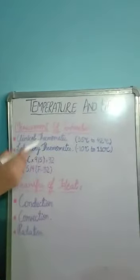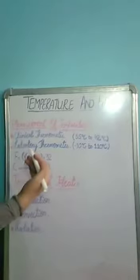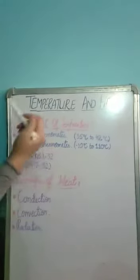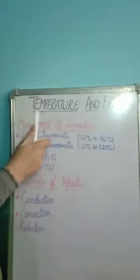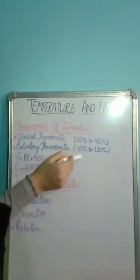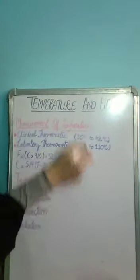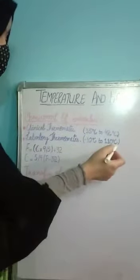Now we are having laboratory thermometer. Laboratory thermometer is used to measure temperature of inanimate objects. It is usually used in laboratory. It has a scale which reads the temperature from as low as minus 10 degrees Celsius and as high as 110 degrees Celsius.